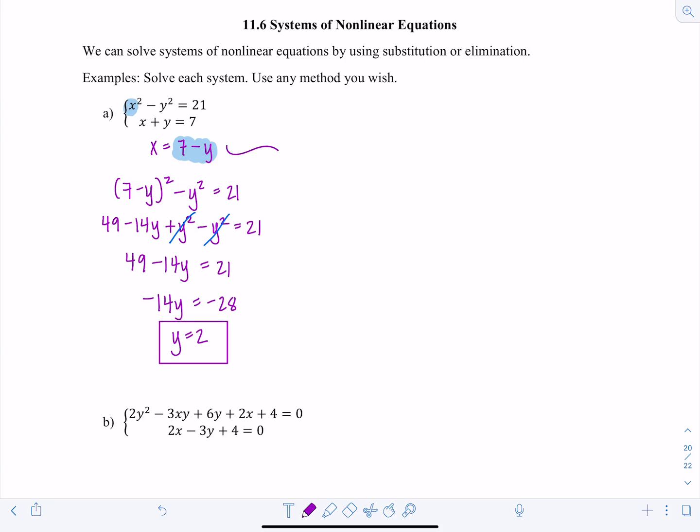Now I just need x, but that's pretty easy, because I know x is 7 minus y, so x is going to be 7 minus 2, which is 5. So my solution set contains the ordered pair 5, 2.